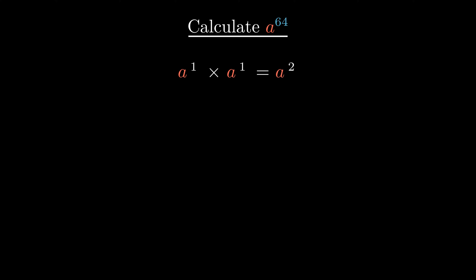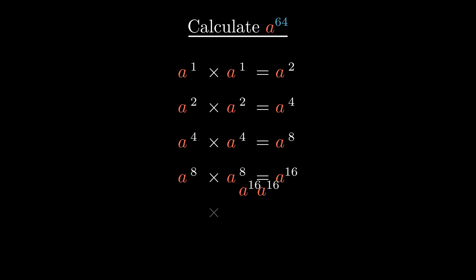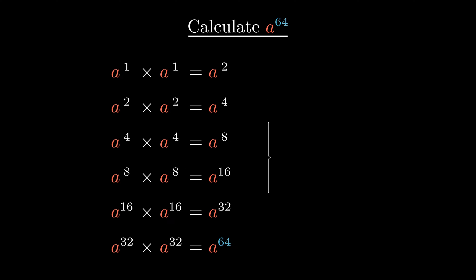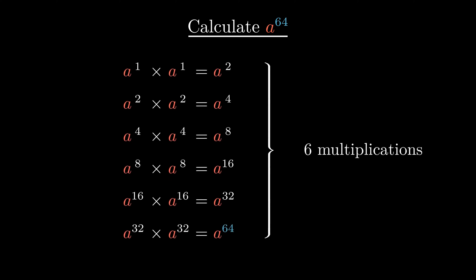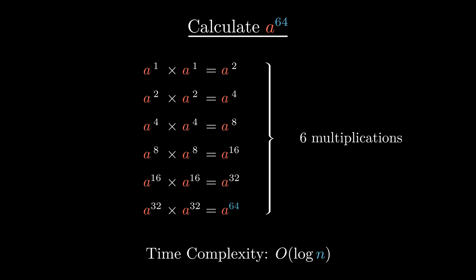Let's look at a special case. When n is a power of 2, is there a way to solve the problem efficiently? For example, when n equals 64, we can first calculate a squared as a times a, then calculate a to the power of 4 with a squared times a squared. We can calculate a to the power of 8, 16, and so on in the same way, until we get a to the power of 64. This way, we only need 6 multiplications to calculate a to the power of 64. In other words, the time complexity is reduced to O(log n).